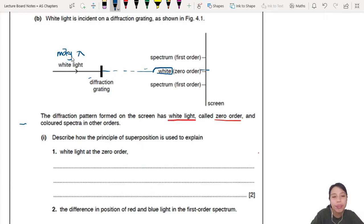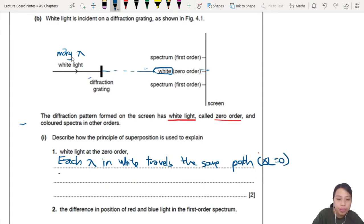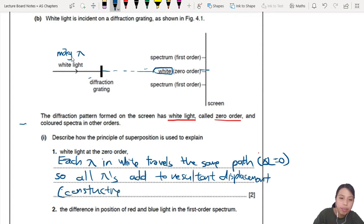So describe how you can explain white light at zero. Why is it white here and the rest all got color. The rainbow comes out. So you want to say each wavelength in your white light travels the same path difference. Travels the same path or you say zero path difference.